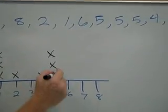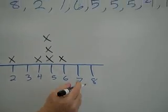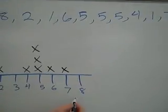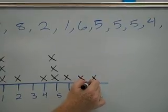The number 6 only occurs one time, so there is 1 x. The number 7 one time, so 1 x. The number 8 one time, so there is only 1 x.